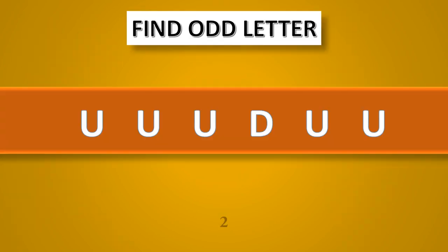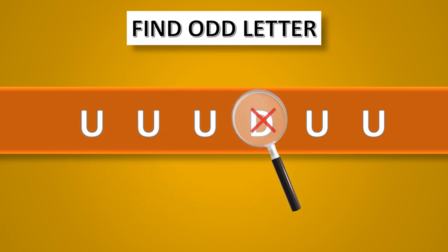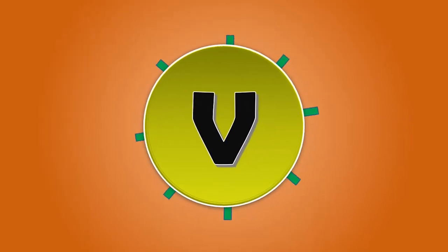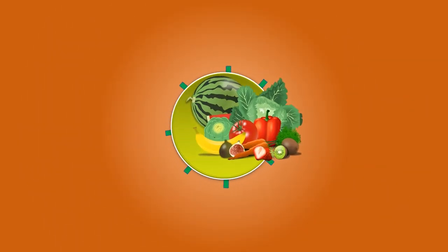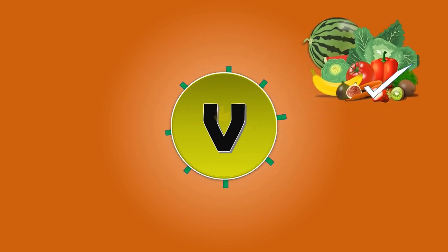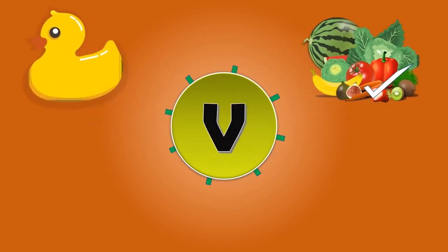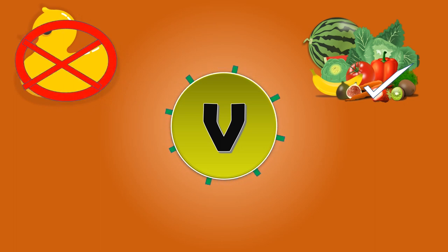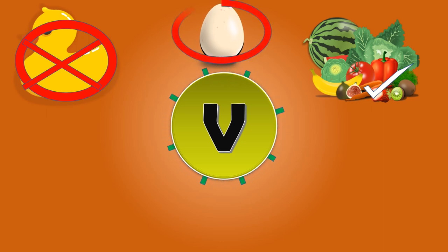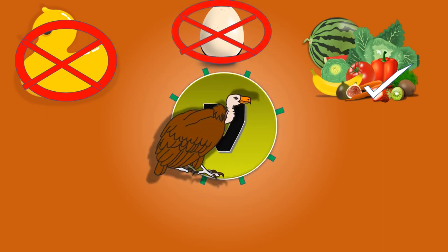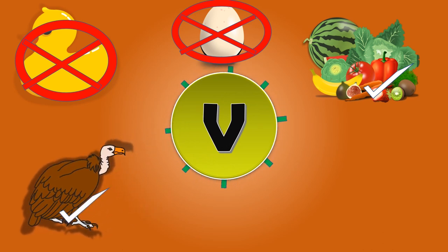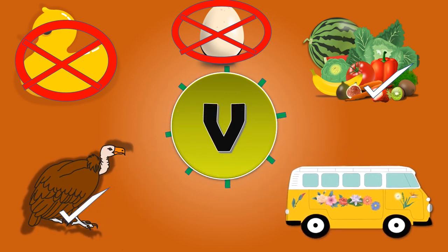V. V for vegetables, correct, yes. V for duck — no, it's wrong. V for egg — no, it's wrong. V for vulture, correct, yes. V for van, correct, yes. Find odd letter.